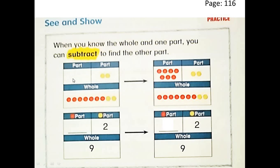What about this part? How many red circles do we have? Let's think about it. The whole is 9 circles. The first part has 2 yellow circles. What about the second part? How many red circles should the second part have? Let's count up these red circles, grade 1: 1, 2, 3, 4, 5, 6, and 7. So we have 7 red circles here.